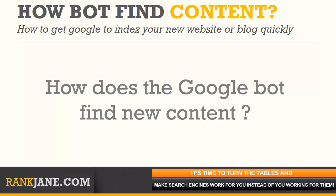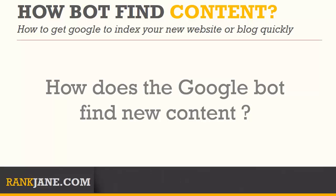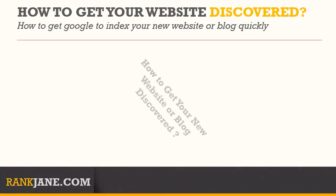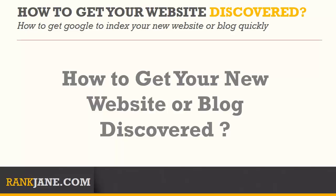So how does the Googlebot find new content on the web, such as new websites, blogs, pages, etc.? It starts with web pages captured during previous crawl processes and adds in sitemap data provided by webmasters. As it browses web pages previously crawled, it will detect links upon those pages to add to the list of pages to be crawled. If you want more details, you can read about them in Webmaster Tools Help. New content on the web is discovered through sitemaps and links. Now we'll take a look at how to get sitemaps on your website and links to it that will help the Googlebot discover new websites, blogs, and content.